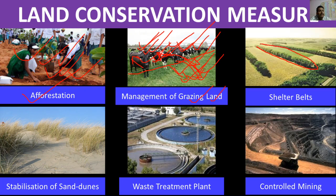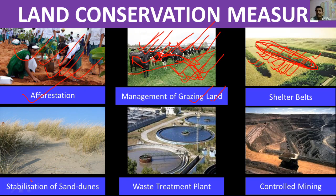For shelter belts, you can see two crop fields with a line of trees planted between them. These trees reduce the speed of strong winds, so the wind does not have enough power to pick up the loose soil and carry it away. This reduces wind erosion of the soil.